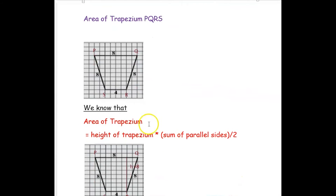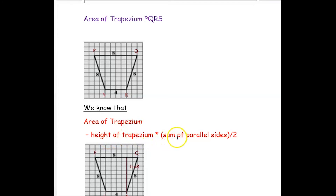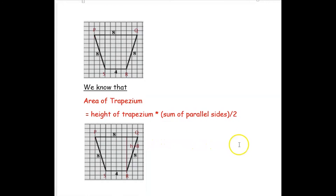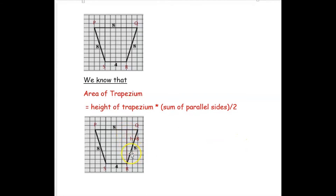Now we are going to find the area of the same trapezium using the formula: area of trapezium equals height into sum of parallel sides, divided by 2. The height of this trapezium from base to base is 8. The parallel sides are PQ and SR, which are 8 and 4.